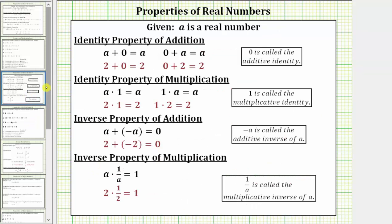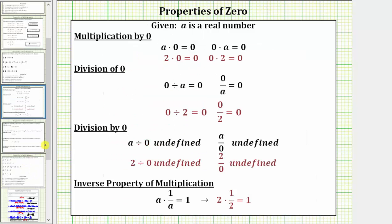On this slide, we have the identity property of addition, the identity property of multiplication, the inverse property of addition, and the inverse property of multiplication. And then finally, on this slide, we have several properties of zero.